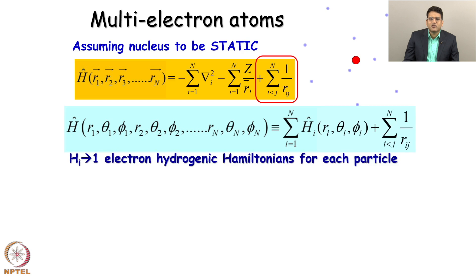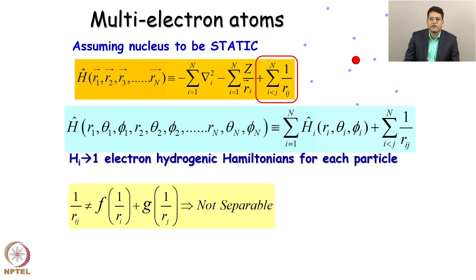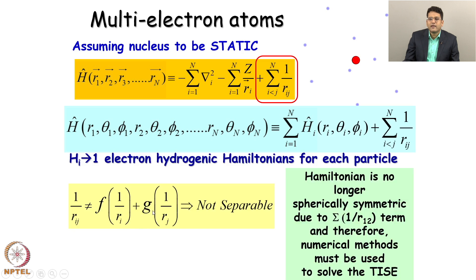The hydrogenic H_i is a one-electron hydrogenic Hamiltonian for each particle. So I can write the full Hamiltonian as a sum of hydrogenic Hamiltonians plus the 1/R_ij term. The problem with this 1/R_ij term is that it is not separable — I cannot write R_ij as an additive two-variable quantity, so I cannot write it as 1/R_i plus 1/R_j. Because I cannot separate these two variables, the Hamiltonian is no longer spherically symmetric due to the presence of the 1/R_ij term. Therefore it is necessary to use numerical methods to solve the time-independent Schrödinger equation.